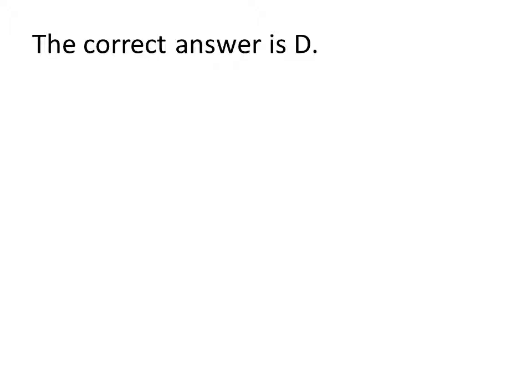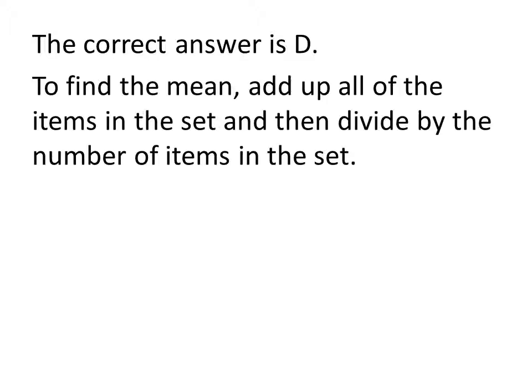The correct answer is D. To find the mean or the average, we add up all of the items in the set — in other words, 59, 65, 75, 68, 82, 74, and 86 — and then we divide this total by the number of items in the set. Again, you'll remember there are 7 items there.